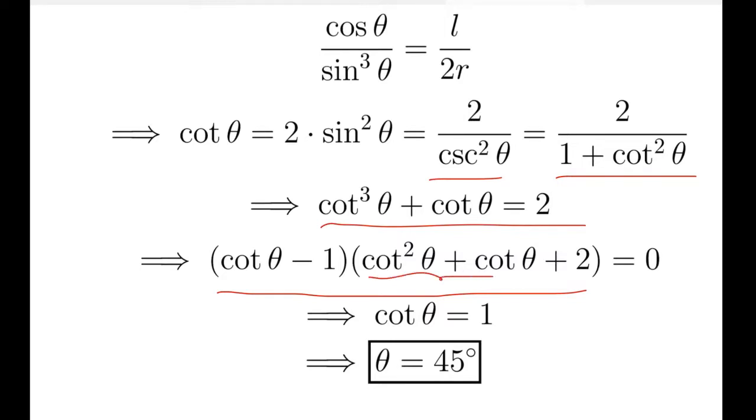We can observe that the discriminant of this quadratic is less than 0. So from here what we get is the only root is cot theta equals to 1. From here what we get is theta equals to 45 degree. So the rod should settle at an angle theta equals to 45 degree with the verticals.